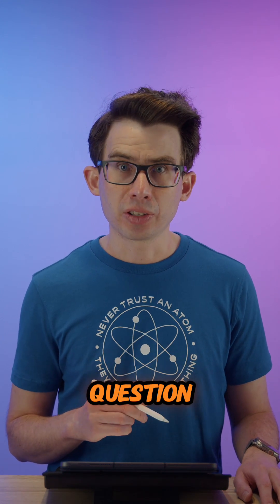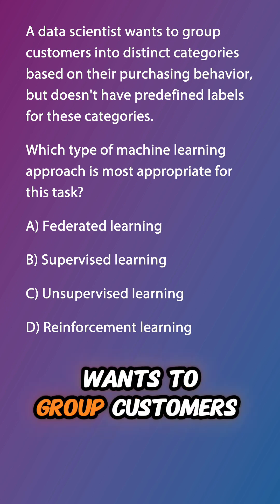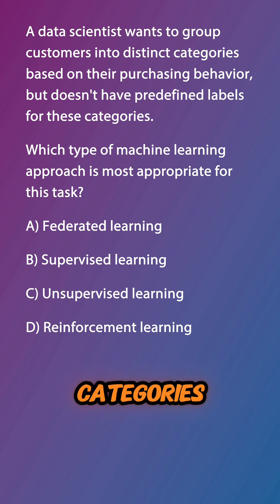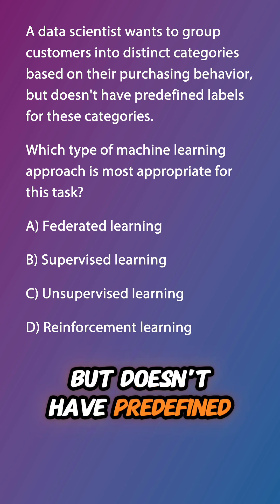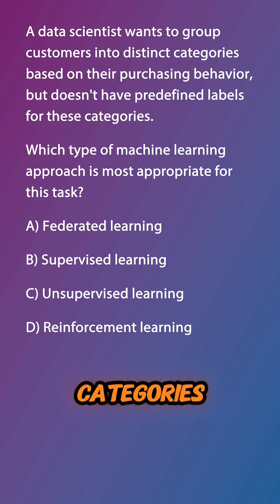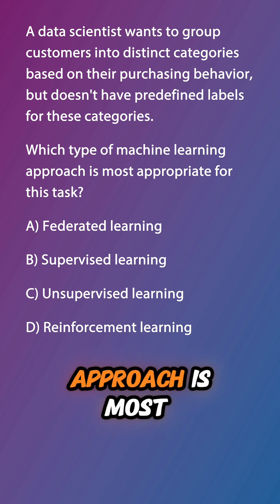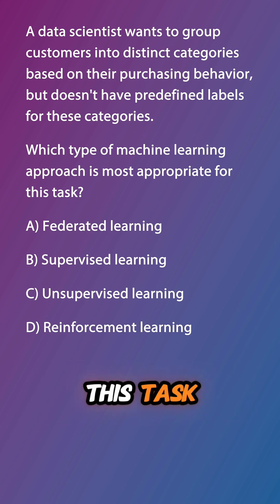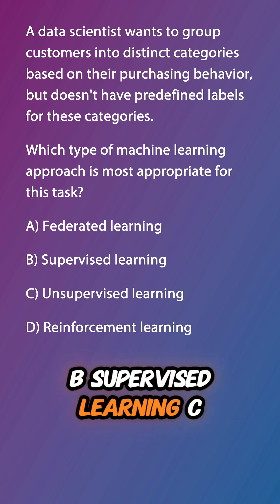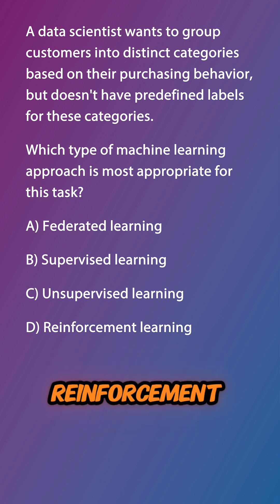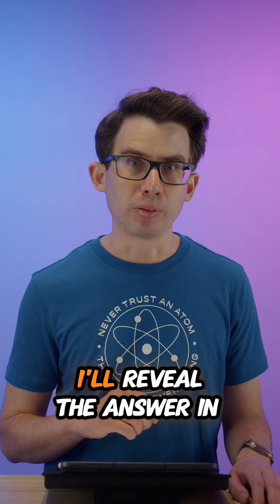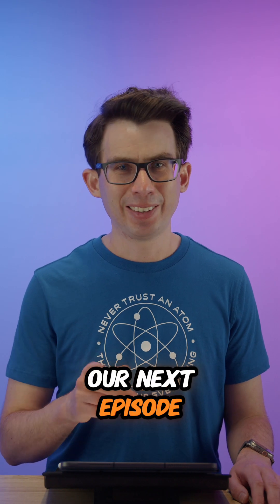Let's do a review question before we wrap up this episode. A data scientist wants to group customers into distinct categories based on their purchasing behaviour, but doesn't have predefined labels for these categories. Which type of machine learning approach is most appropriate? A. Federated learning, B. Supervised learning, C. Unsupervised learning, D. Reinforcement learning. I'll reveal the answer in our next episode — see you then.